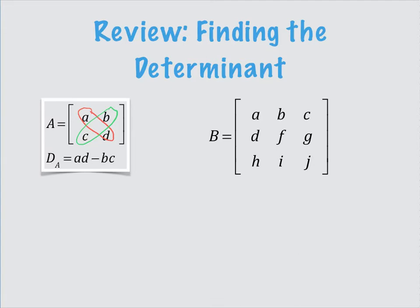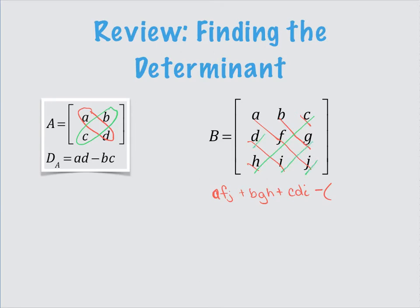In a 3 by 3 we have three main diagonals: A, F, J; B, G, H; and C, D, I. We multiply those to get AFJ plus BGH plus CDI, and then we subtract the multiplication of the secondary or minor diagonals to be able to get our determinant.